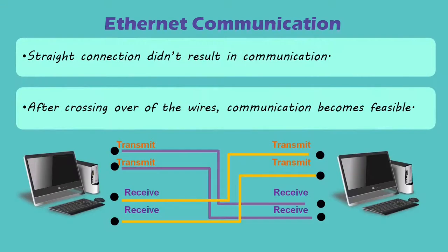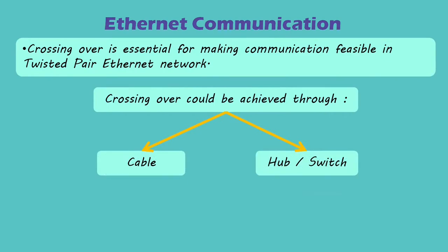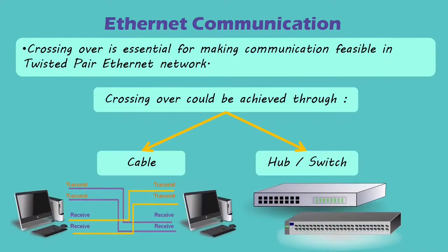Now, refer to the second figure. To make communication possible, transmit pins of the first host or computer are connected to the receive pins of the second one, and receive pins of the first host or computer are connected to the transmit pins of the second one. So, crossing over of pins is necessary for making communication successful. We now understand why crossing over is necessary for communication.